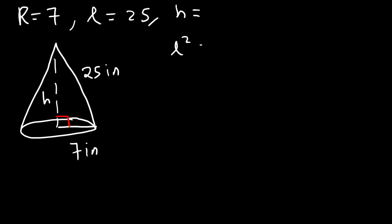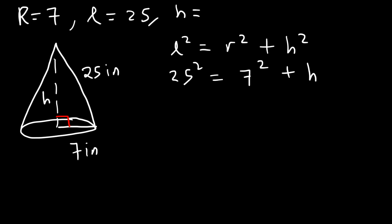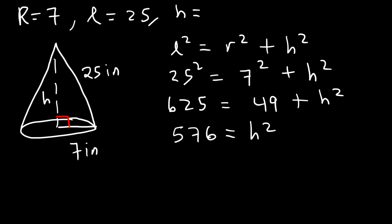Using the Pythagorean theorem: l² = r² + h². With l = 25 and r = 7: 25 squared is 625, and 7 squared is 49. Subtracting 49 from both sides gives 625 minus 49, which is 576, equal to h². Taking the square root of both sides, the square root of 576 is 24. So h is 24 inches.